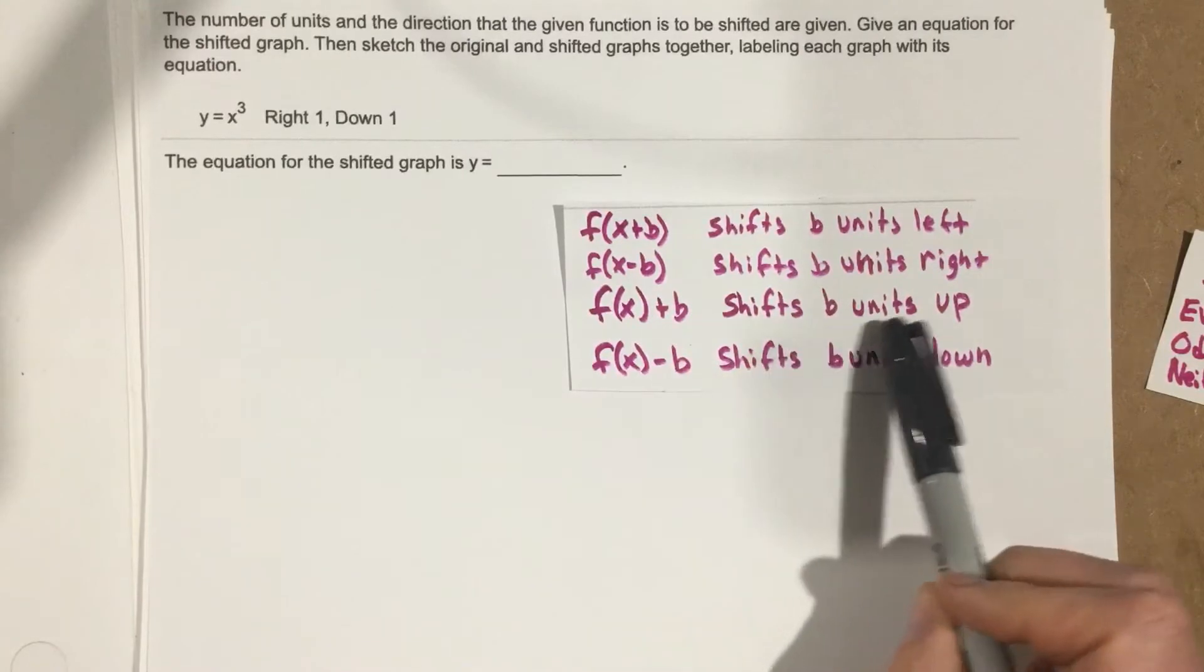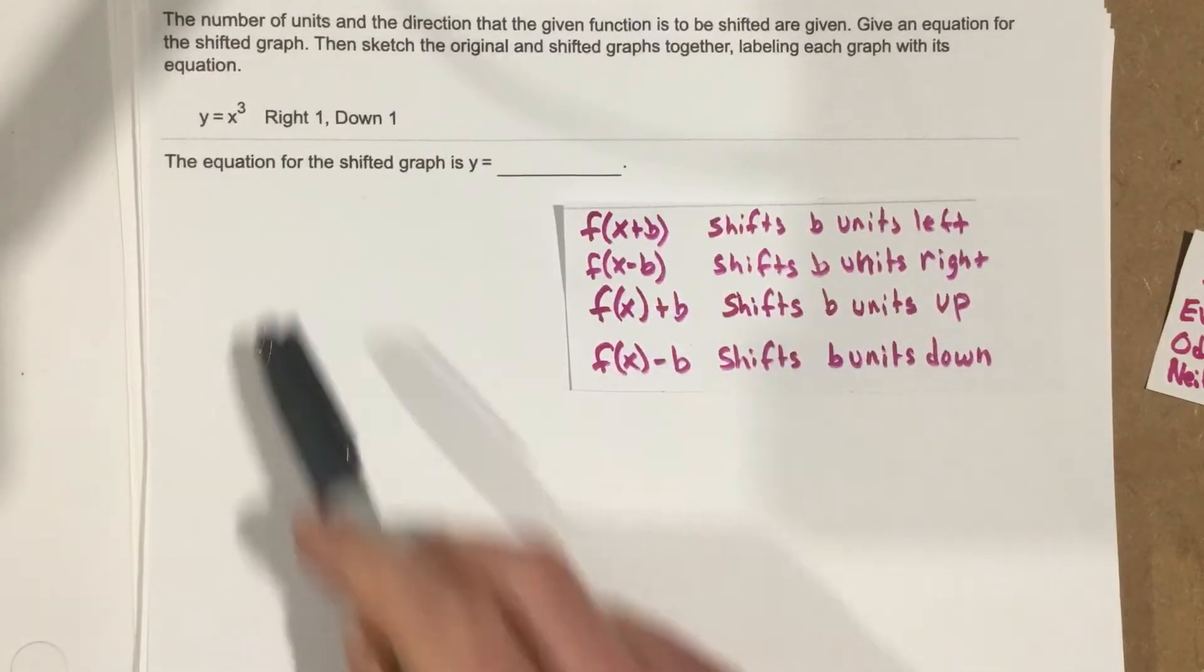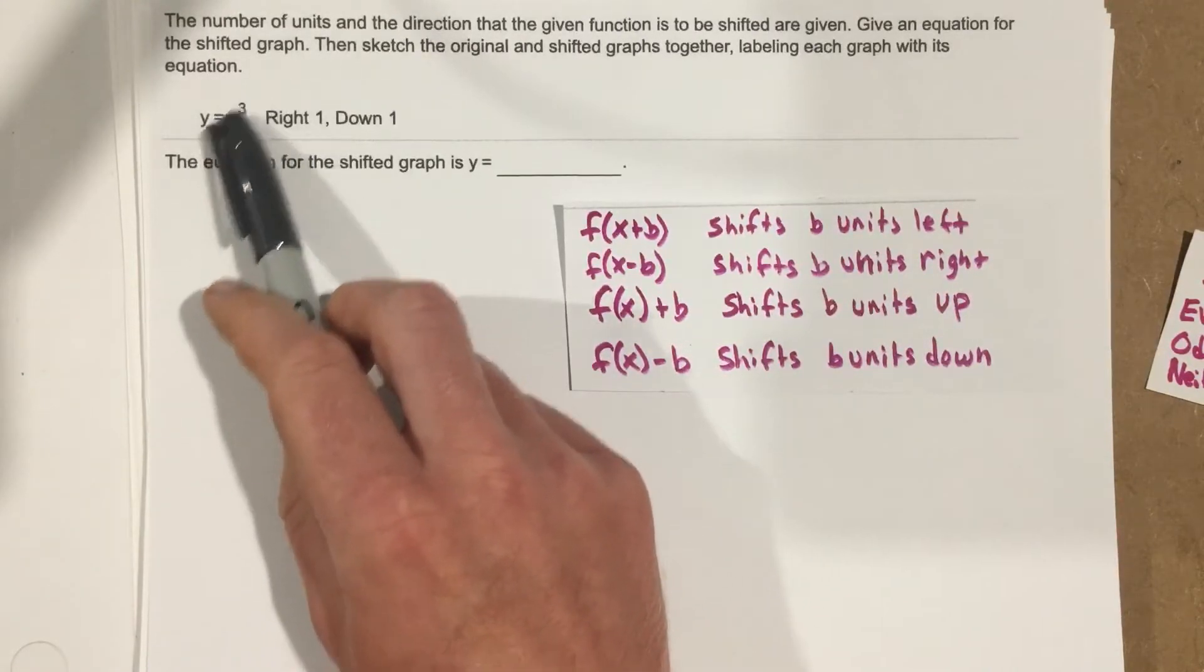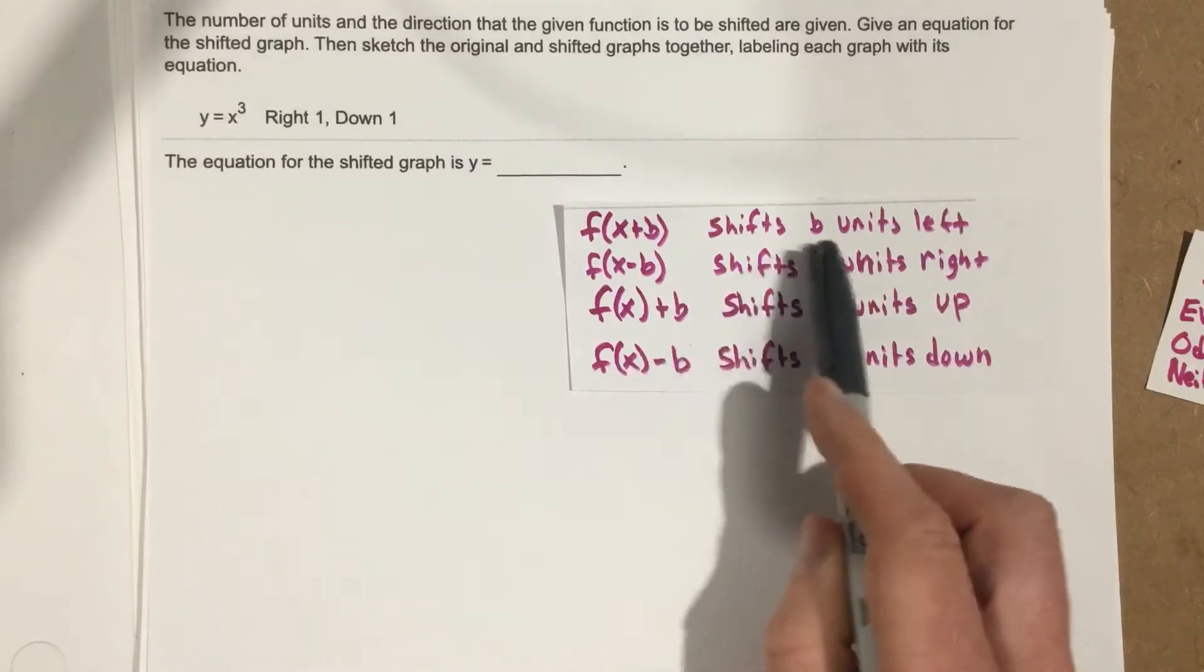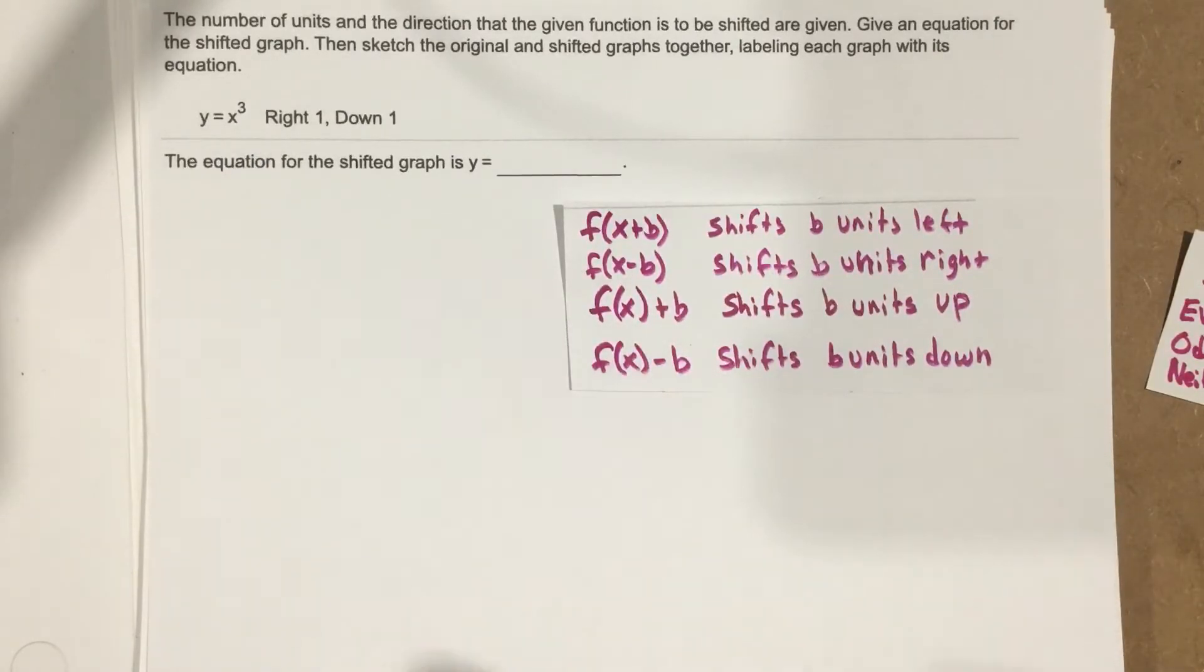So to shift this up or down, we add to the entire function, which is x³. To shift left or right, we add just to the x value, inside the cube.